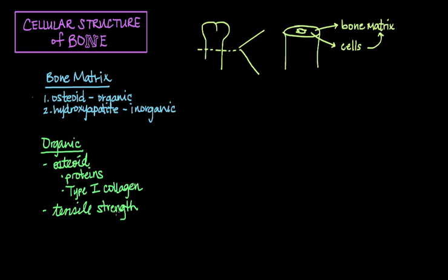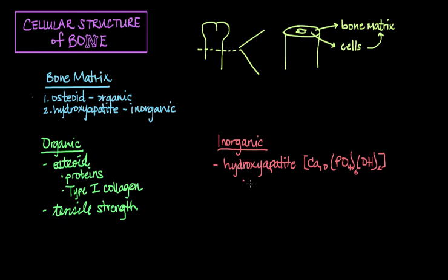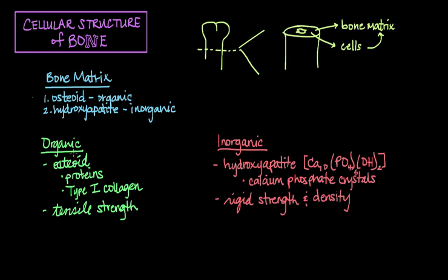Now for the inorganic portion of bone, the inorganic portion is made up of hydroxyapatite. And I'll draw its chemical formula here: it is calcium along with phosphate and water. So basically all hydroxyapatite is is calcium phosphate crystals, and these calcium phosphate crystals are the mineral portion of bone that gives bone its rigid strength and density. So now you have a better understanding of the osteoid or organic portion of the bone matrix and hydroxyapatite which make up the inorganic portion of the bone matrix.